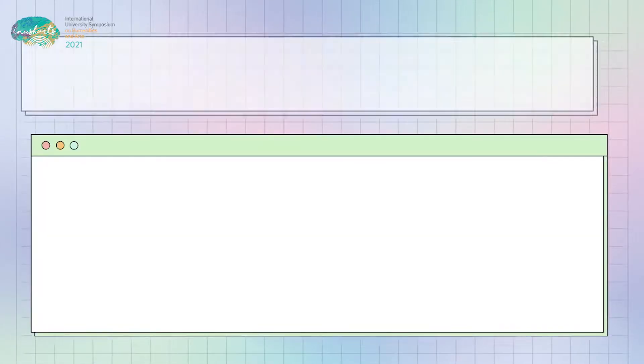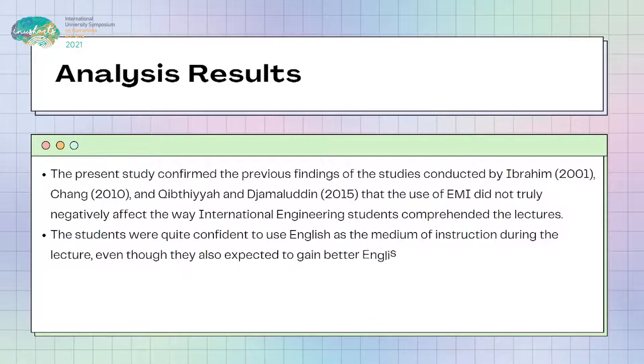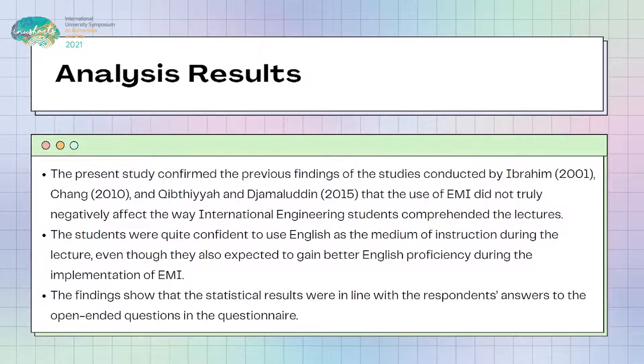The present study confirmed the previous findings of the studies conducted by Ibrahim in 2001, Chang in 2010, and Kiptia and Jamaluddin in 2015 that the use of EMI did not truly negatively affect the way international engineering students comprehended the lectures. It was discovered that the students were quite confident to use English as the medium of instruction during the lecture, even though they also expected to gain better English proficiency during the implementation of EMI.